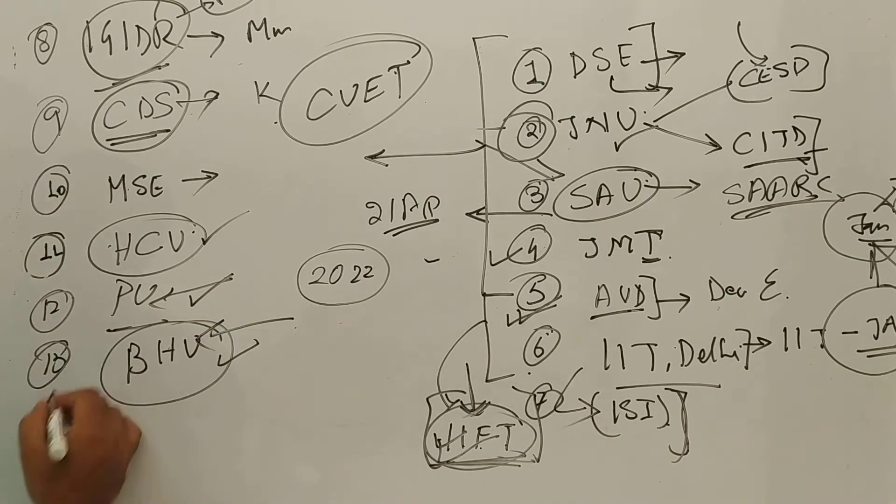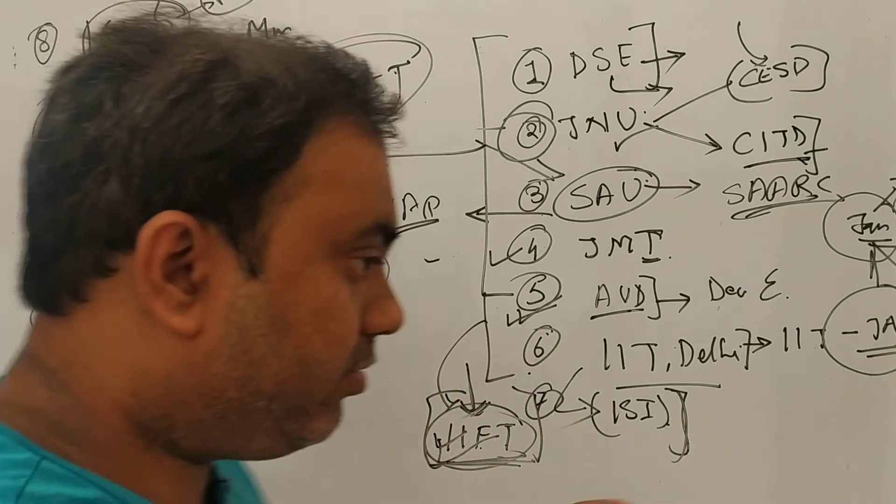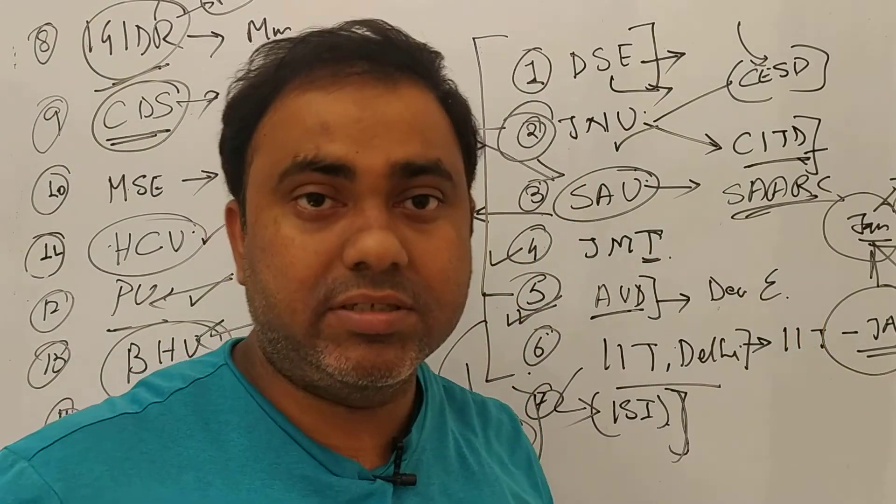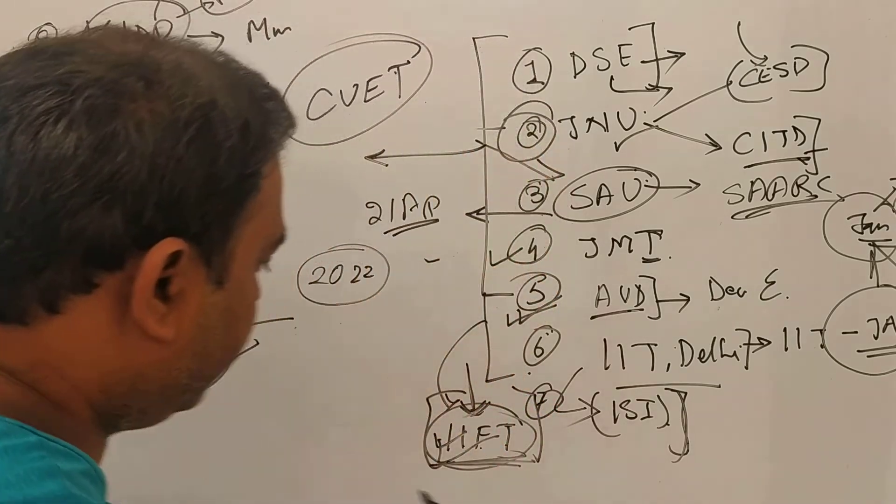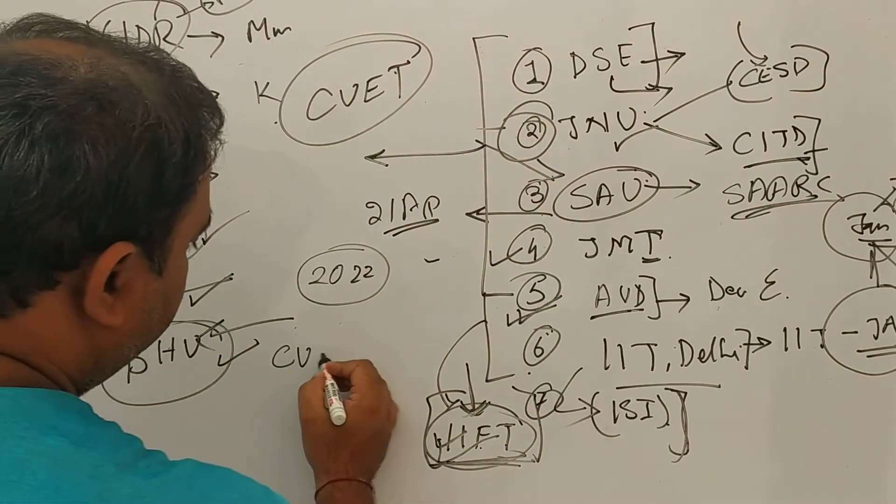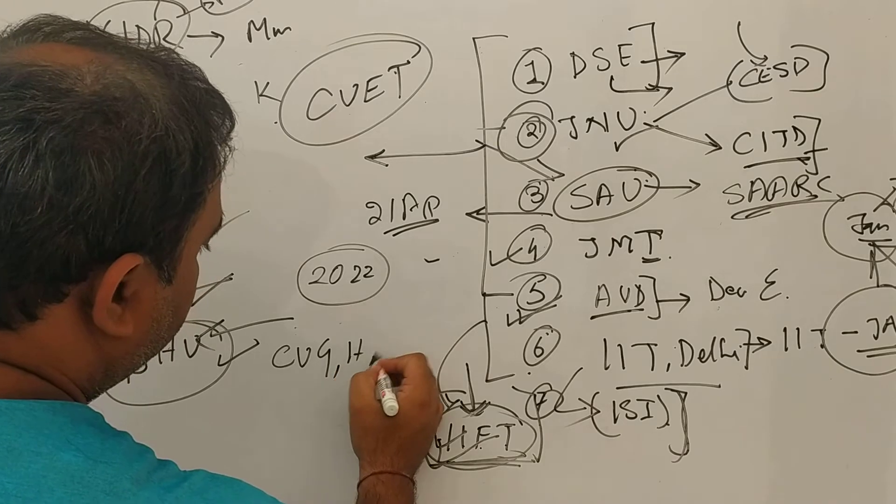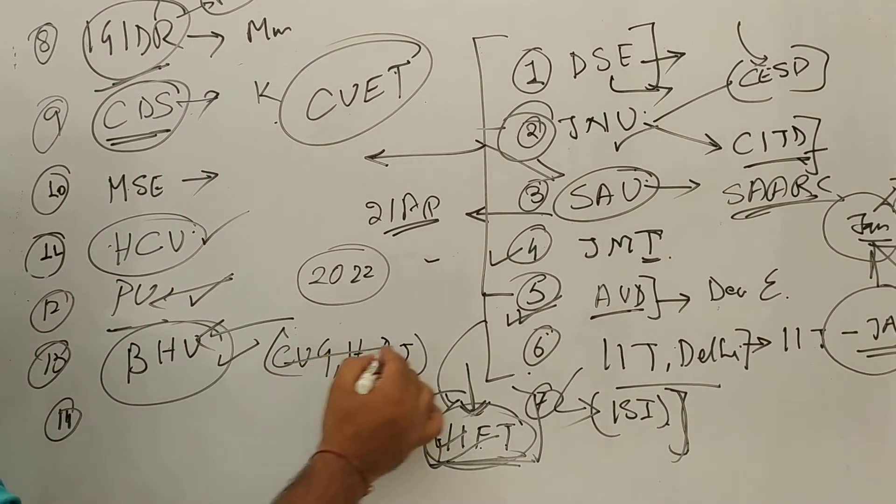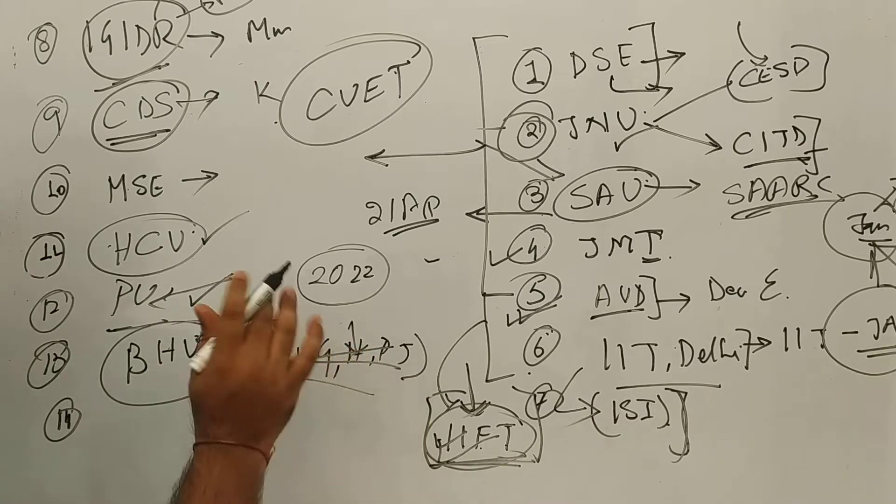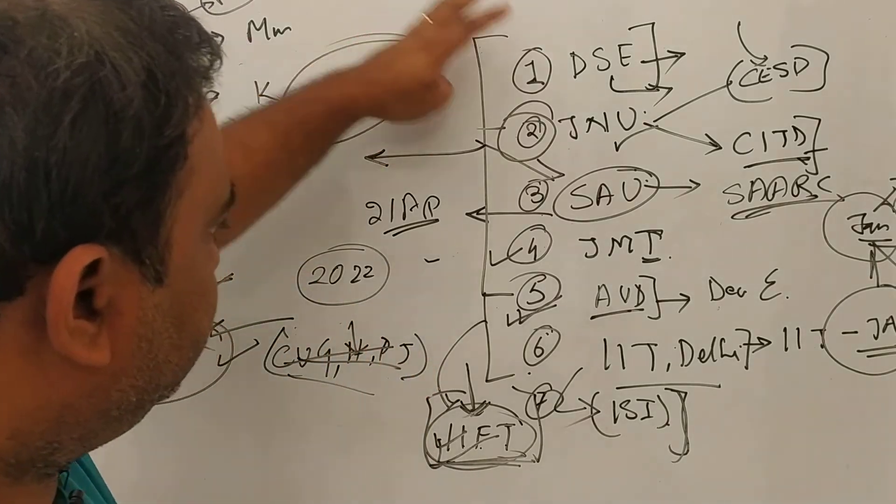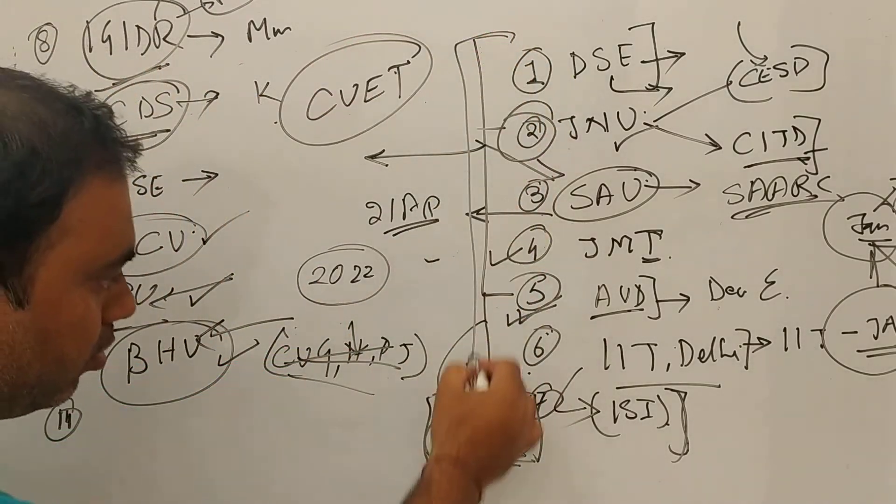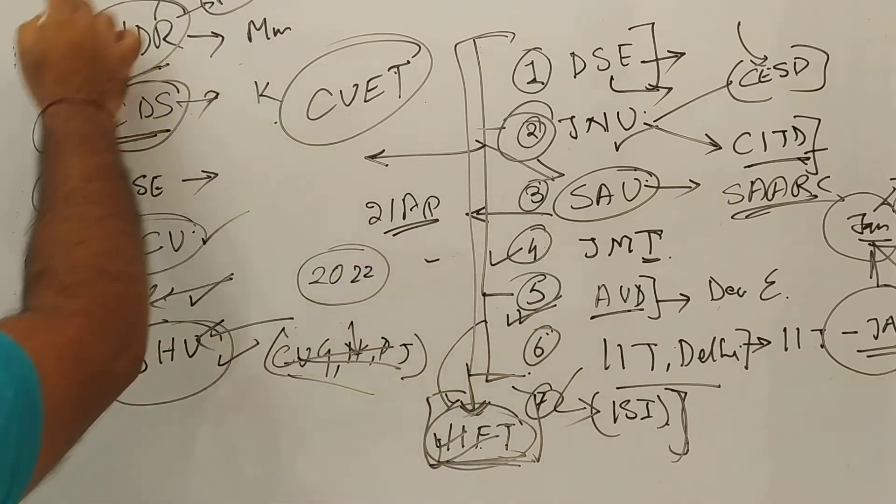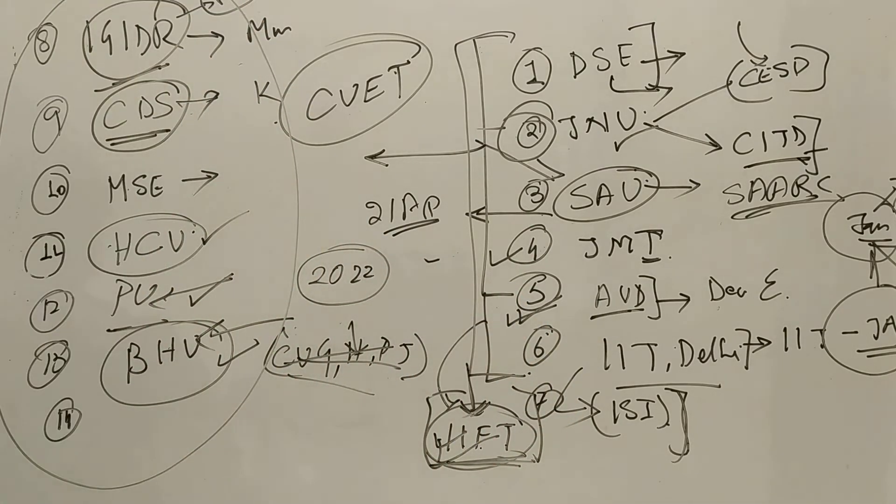And finally, I think from the last 5-6 years, there are many central universities by the name of Central University of Gujarat, Haryana, Punjab, Jharkhand, so you can apply for all these universities also, but then this should be the last resort. First, if not in this hierarchy, but then first you should prefer for all these institutions.